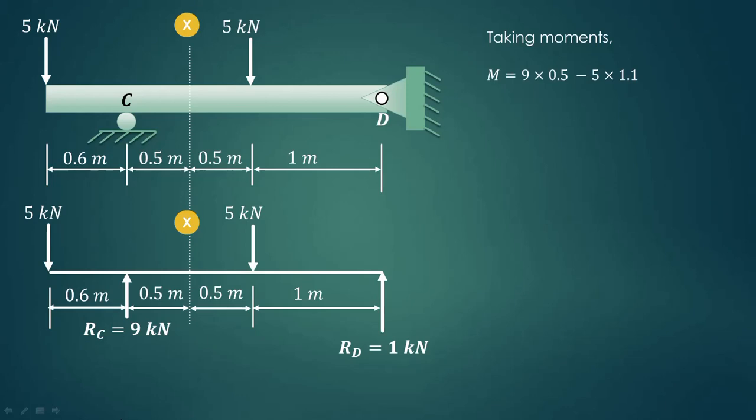The moment will be equal to: this Rc will create clockwise moment as indicated, and perpendicular distance is 0.5, so 9 into 0.5. Whereas this 5 kN force will produce anti-clockwise moment, so 5 and perpendicular distance from this end up to this section is 0.6 plus 0.5, that is 1.1. Now as this moment is anti-clockwise it is negative.